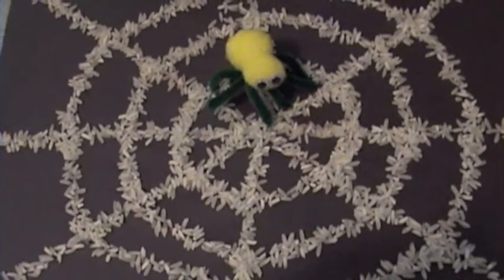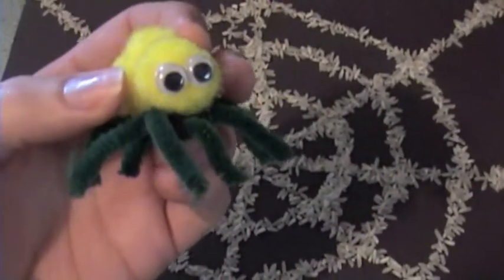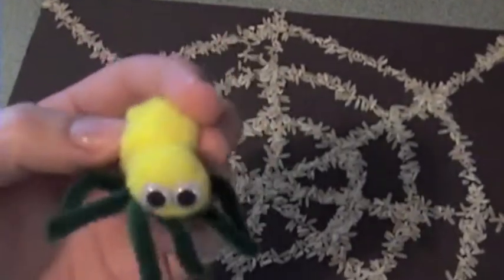pour a ton of rice over top, let it dry, shake the rice off, and voila. For the spider, we chose to go with colorful spiders - one is orange and yellow and the other one is yellow and green.